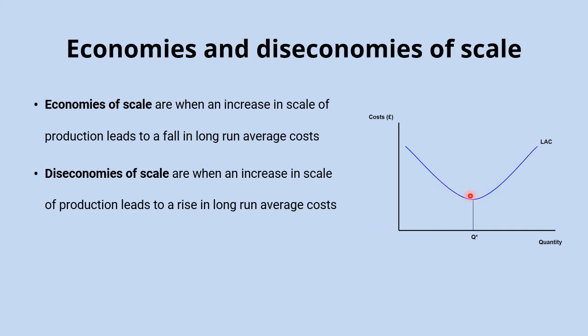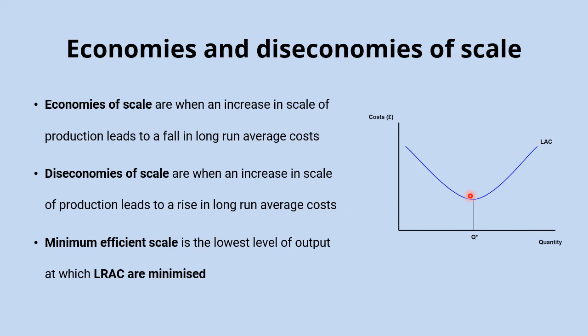The point where long run average costs are minimized, or the lowest level of output at which they're minimized, is called the minimum efficient scale of production.